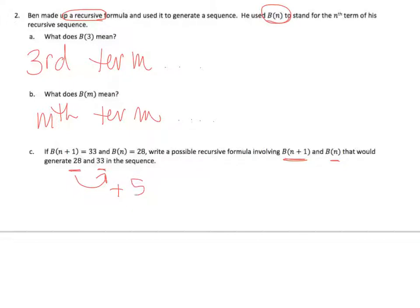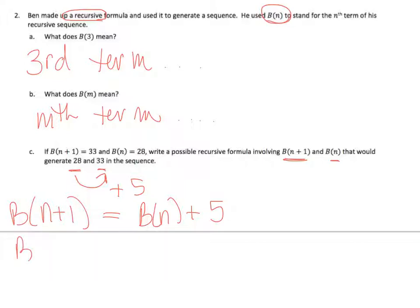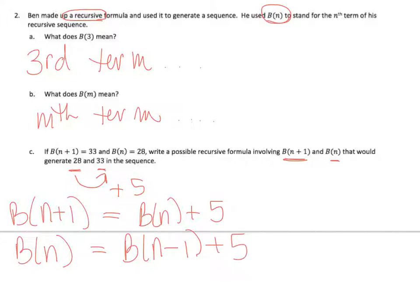That looks like a plus 5, so b of (n+1) equals the previous term plus 5. I could also write it as b of n equals b of (n-1) plus 5, where b of (n-1) is one less than n. Either form is possible — this is what we've been doing today.